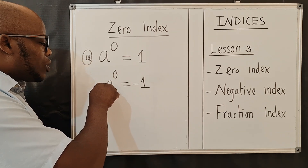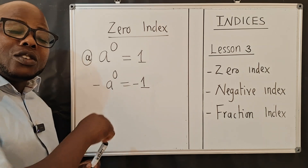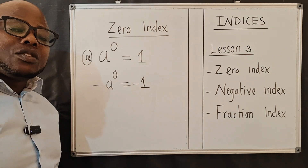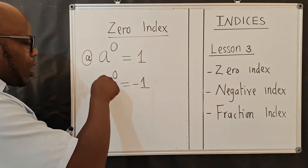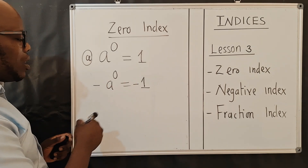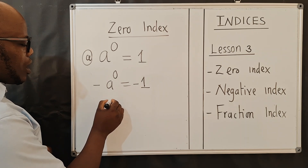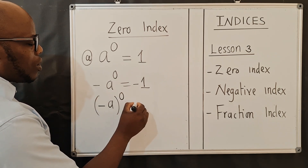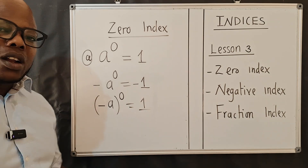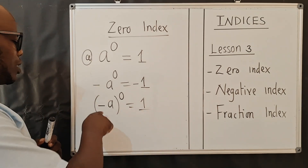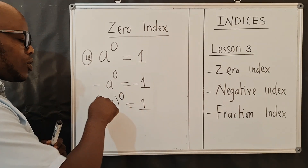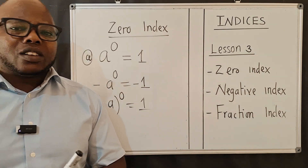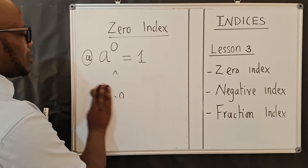This is because the zero has not affected the negative sign. It would be a to the power zero, which gives us one, and one times negative gives us negative one. However, if we want the answer to be positive one, we write the negative a inside brackets to the power zero — in that case both the negative sign and a are affected. I hope you understand that.